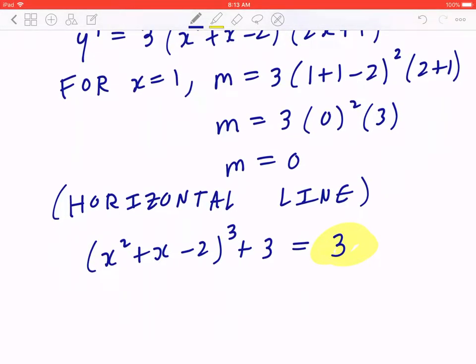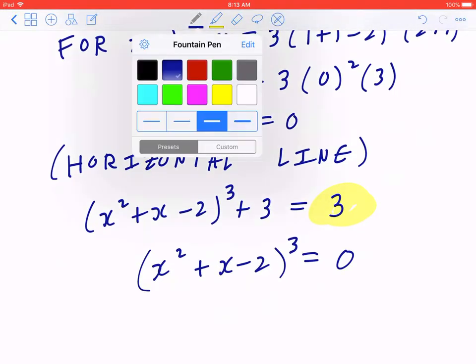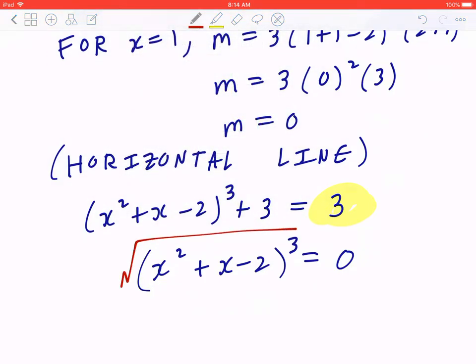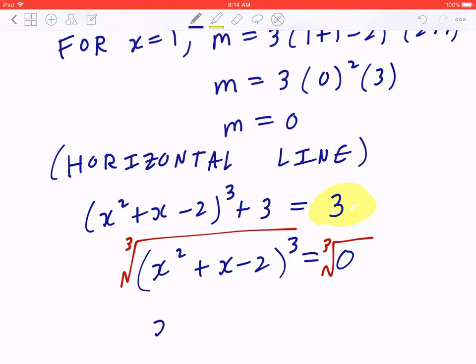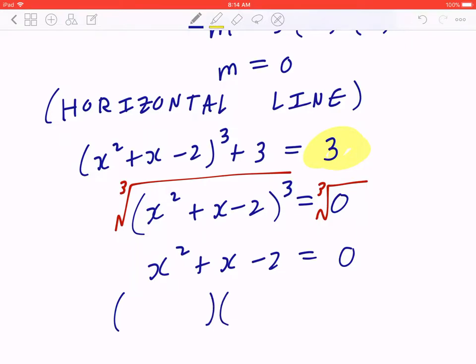So when you solve for this, you can subtract 3 from both sides, which means (x² + x - 2)³ = 0. The opposite of to the power of 3 is to take the cube root. So x² + x - 2 = 0, simple factoring.